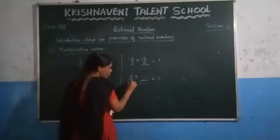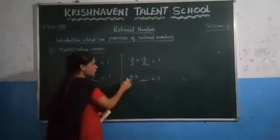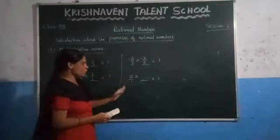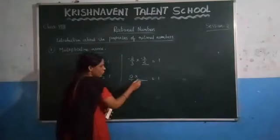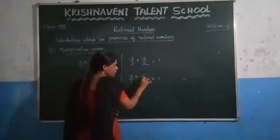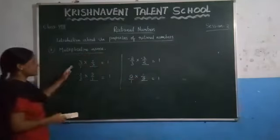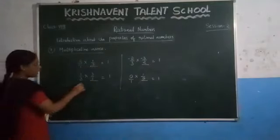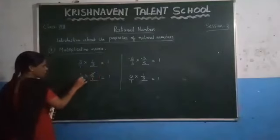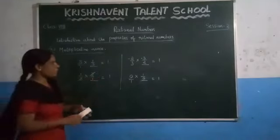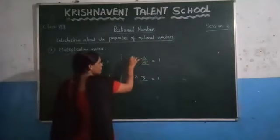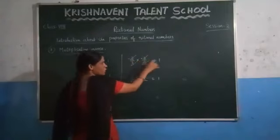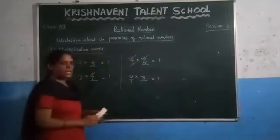You can write 0 as 0 by 1, 0 by 2, or 0 by 3. The reciprocal of 0 by 1 is 1 by 0. But 1 by 0 is not possible — this value is undefined. So we can say that the multiplicative inverse of 0 does not exist. For the other examples: 1 by 3 multiplied by 3 by 1 gives 1 after cancellation. For minus 2 by 3, the 2s cancel and the 3s cancel, and minus into minus is plus, so you get the result as 1.